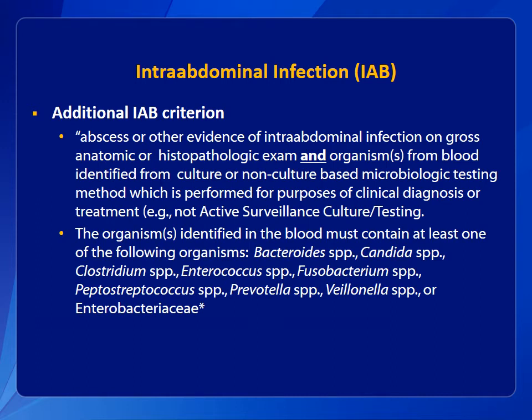In 2016, an additional criterion is added to intra-abdominal infection, or IAB, criteria. If a patient has an abscess or other evidence of IAB on gross anatomic or histopathologic exam, and an organism from the specified list is identified in the blood, the patient meets the criterion for IAB. The list includes organisms belonging to the following genera: Bacteroides, Candida, Clostridium, Enterococcus, Fusobacterium, Peptostreptococcus, Prevotella, Veillonella, and organisms from the Enterobacteriaceae family. If this IAB is not a surgical site infection, the elements must occur within the IWP. Also, the culture or microbiologic testing must be performed for purposes of clinical diagnosis or treatment and not active surveillance.